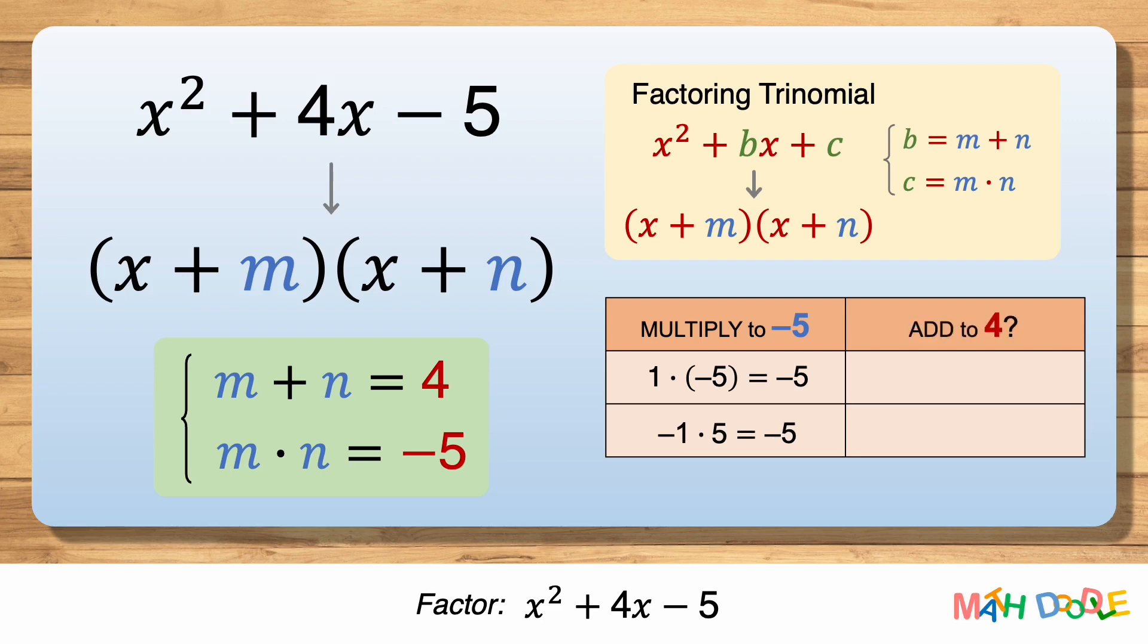1 times minus 5 is minus 5, and minus 1 times 5 is also minus 5. Now let's see which of these combinations adds to 4. 1 plus minus 5 is minus 4, so 1 and minus 5 do not add to 4.